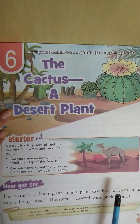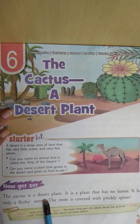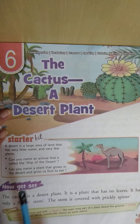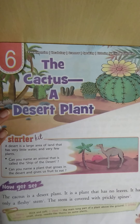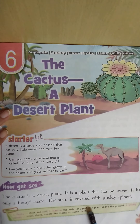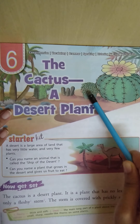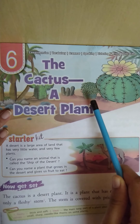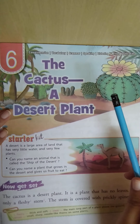It is a plant that has no leaves. It has only fleshy stems. Fleshy means thick and soft, and stem means the main long part of a plant above the ground. Can you see the main part of this plant that is above the ground? That is known as the stem.